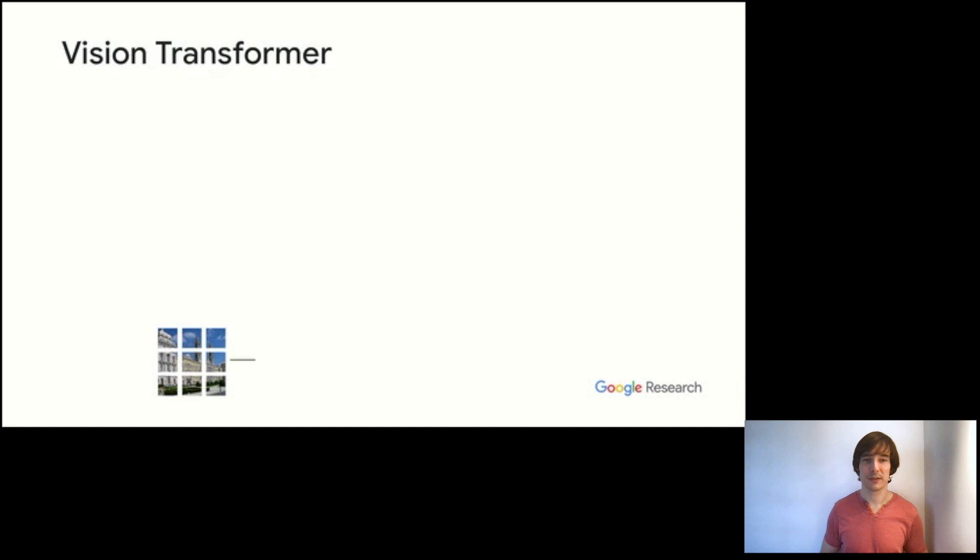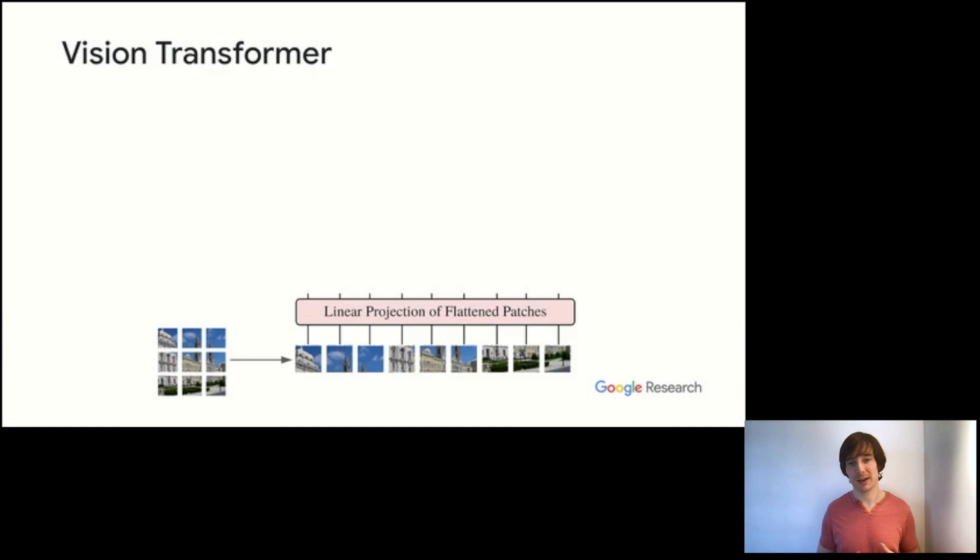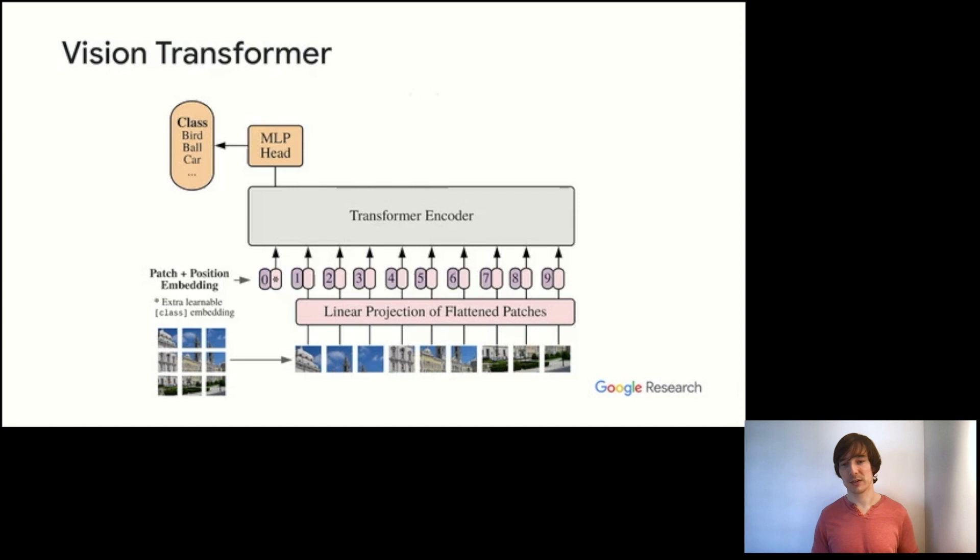So without further ado, here is the model itself. We used what is as close as possible to a vanilla transformer encoder, like the one used in BERT, and the BERT encoder accepts as input a sequence of word embeddings. And so to turn an image into a sequence of embeddings, we first split the image into a grid of patches and then linearly project those patches to vectors. Now at this stage, the order of the patches is lost. So as is popular in language, we add position embeddings such that the model can learn the location of the patches and how that influences loss if that information is useful.